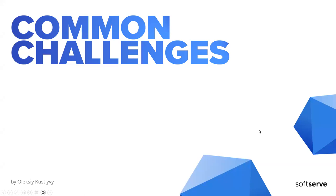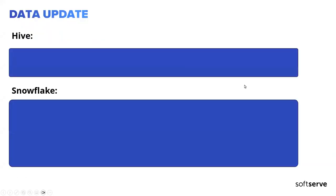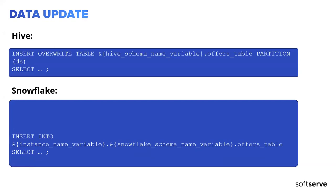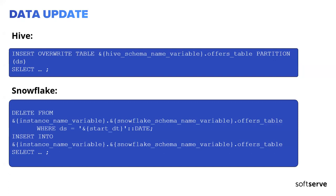Challenges — nothing good comes without a challenge. Let's talk about some common issues I experienced while migrating from Hive to Snowflake. The first is the difference in data insertion: in Hive we use a typical INSERT OVERWRITE by partition statement, but in Snowflake we need to use a DELETE statement followed by an INSERT because it doesn't support INSERT OVERWRITE. This means we need to add an extra statement to delete previous data, and we wrap this in a transaction.